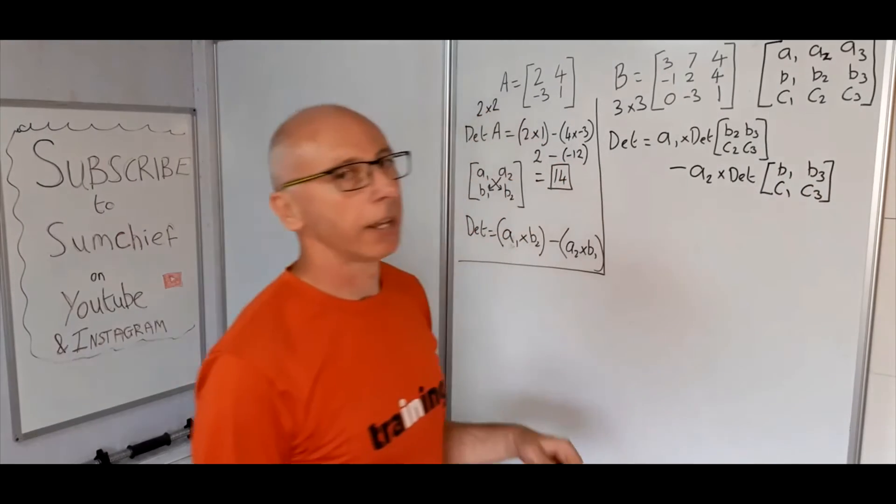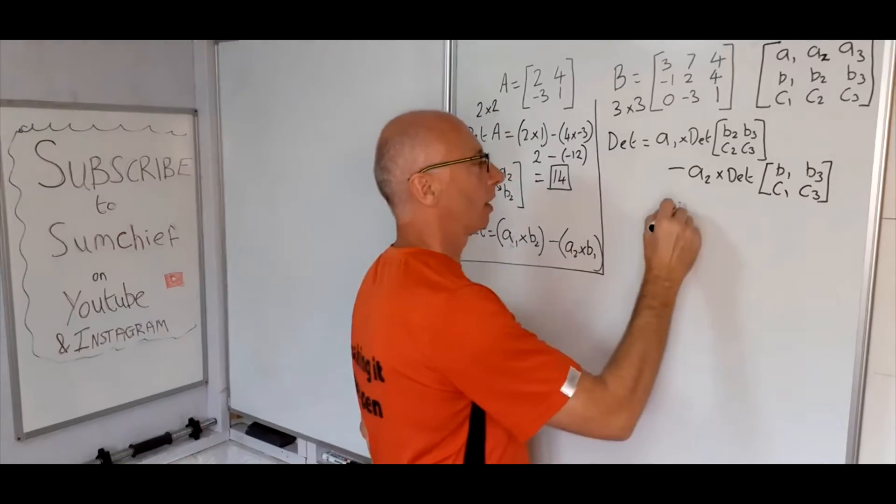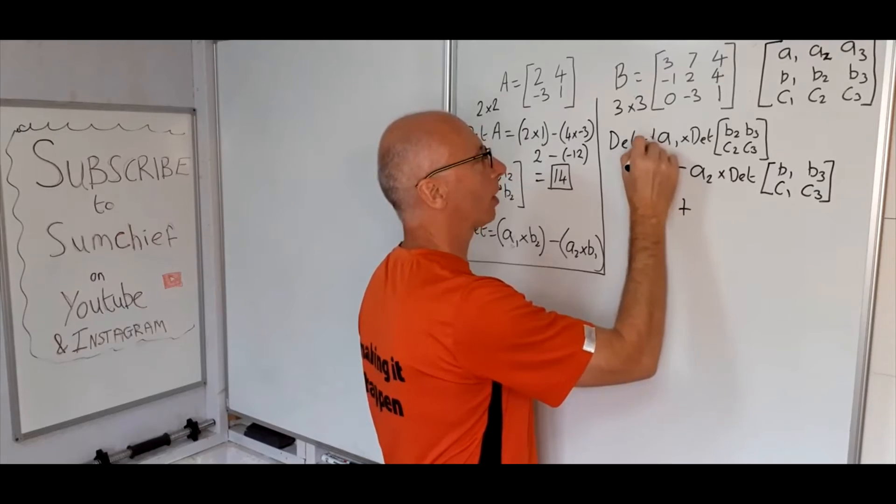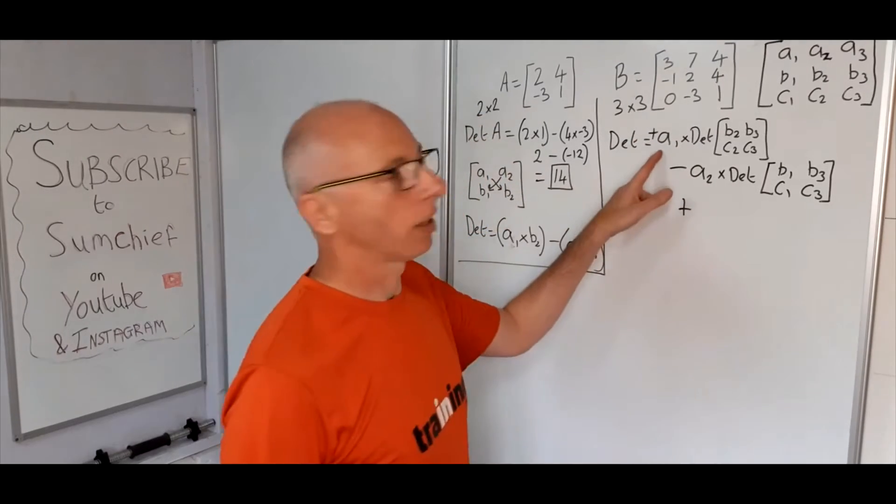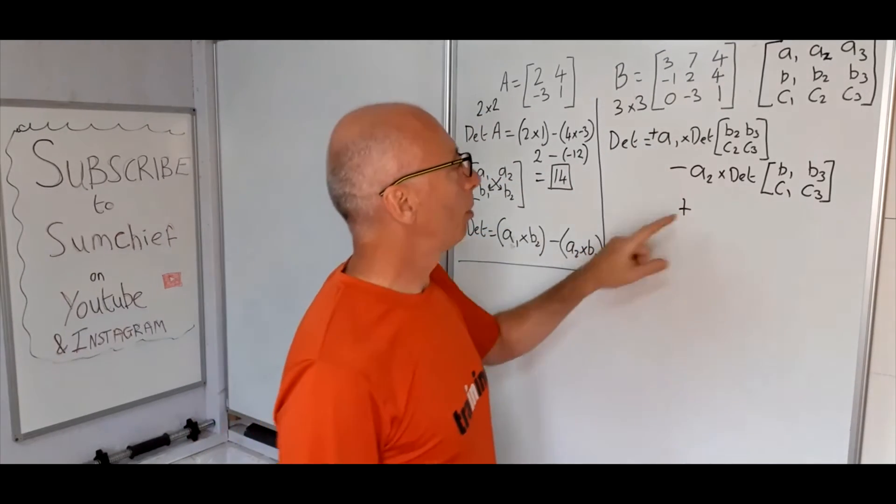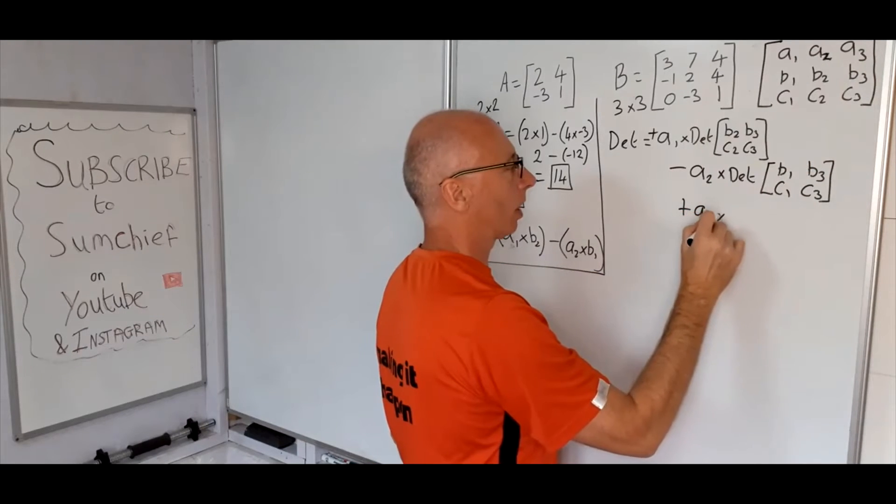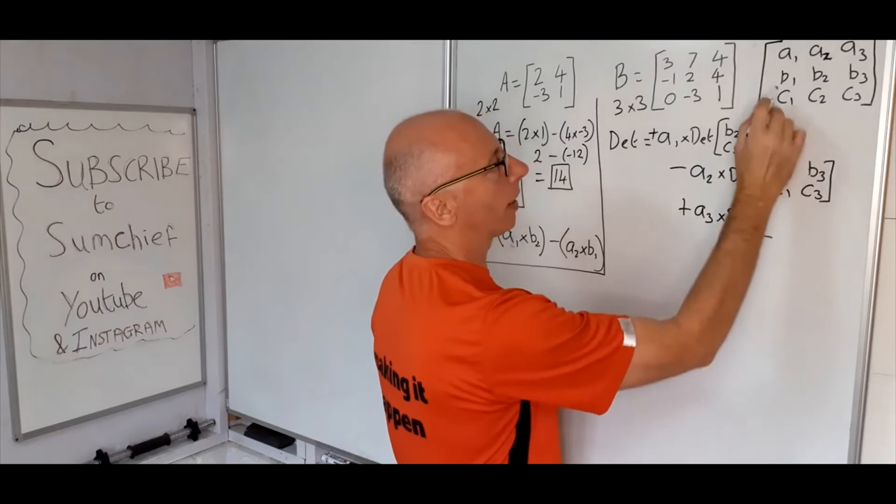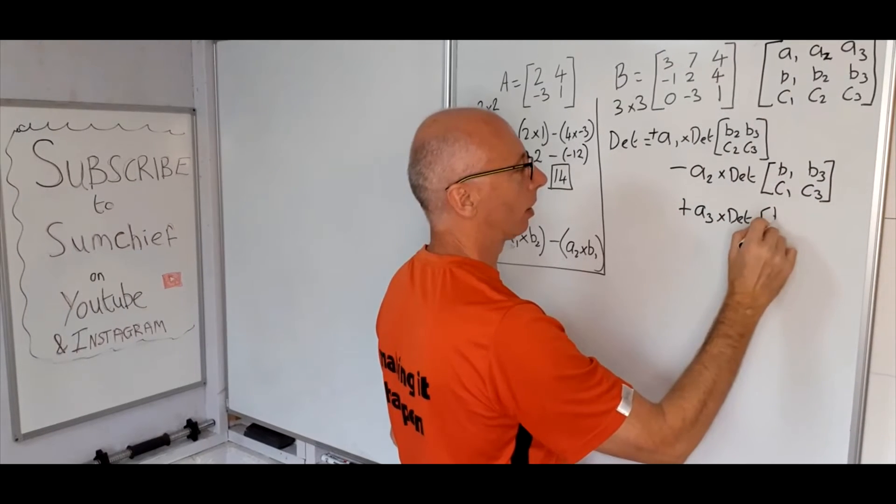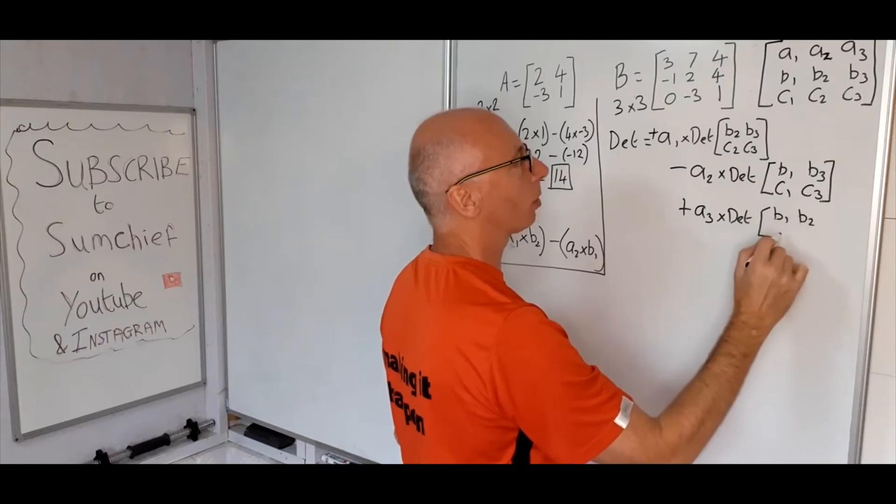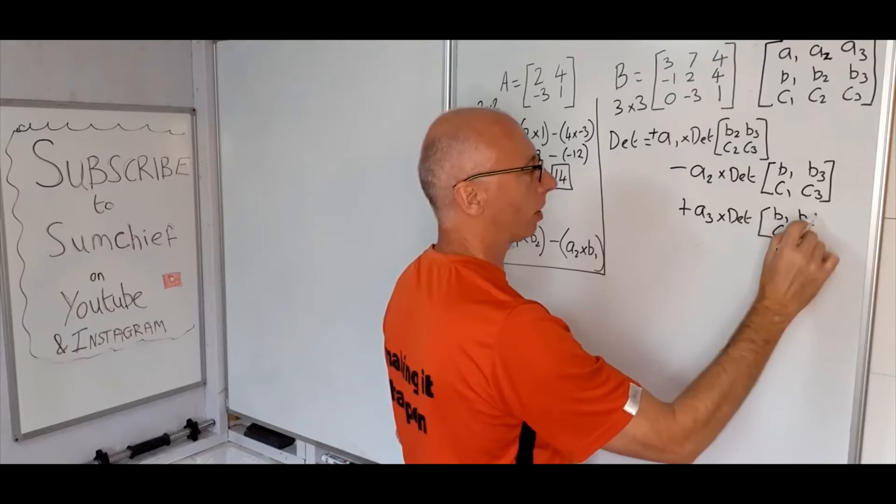And then the next one we do, we add, so if you remember, we alternate the signs, if I put a plus there, obviously don't need to because it's not needed, but plus there, and then we go A3, times determinant, and then this matrix here, B1, B2, C1, C2.